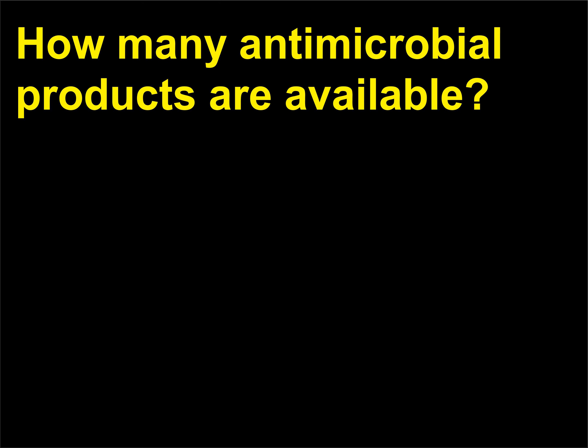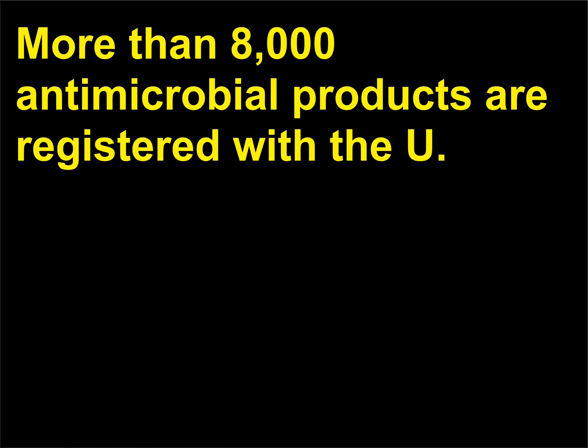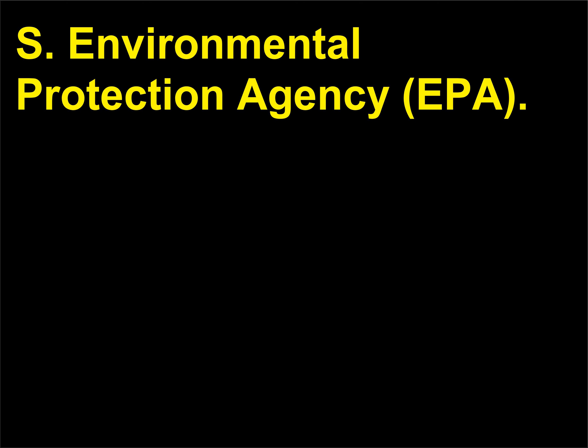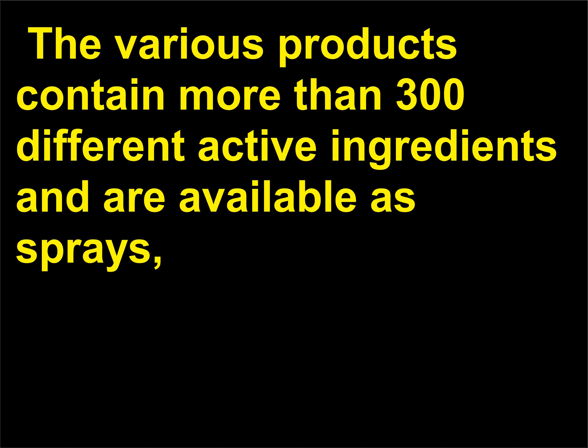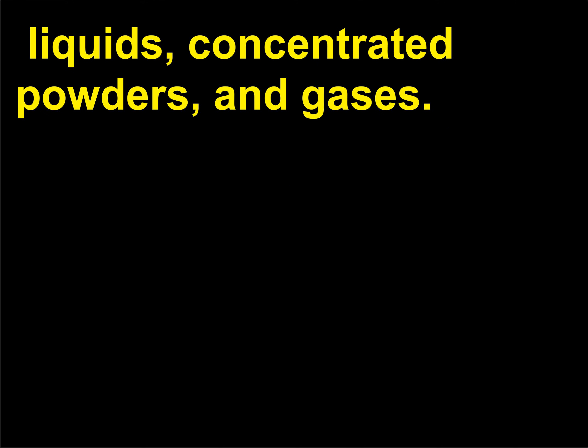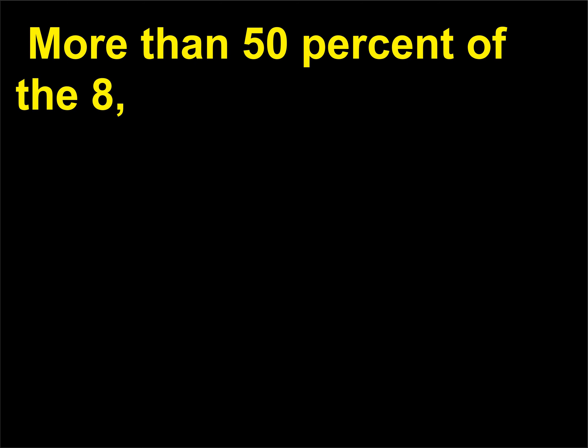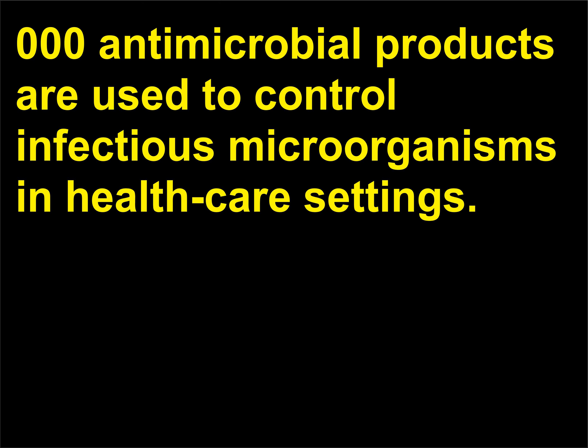How many antimicrobial products are available? More than 8,000 antimicrobial products are registered with the U.S. Environmental Protection Agency (EPA). The EPA regulates products that kill microbes on inanimate surfaces. The various products contain more than 300 different active ingredients and are available as sprays, liquids, concentrated powders, and gases. More than 50% of the 8,000 antimicrobial products are used to control infectious microorganisms in healthcare settings.